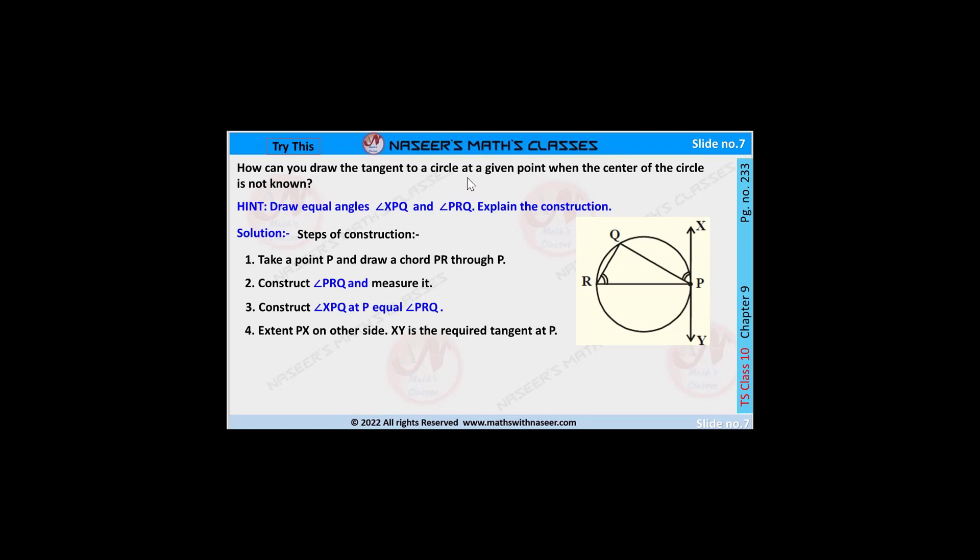How can you draw the tangent to a circle at a given point when the center of the circle is not known? Given: draw equal angles angle XPQ and angle PRQ. Explain the construction.